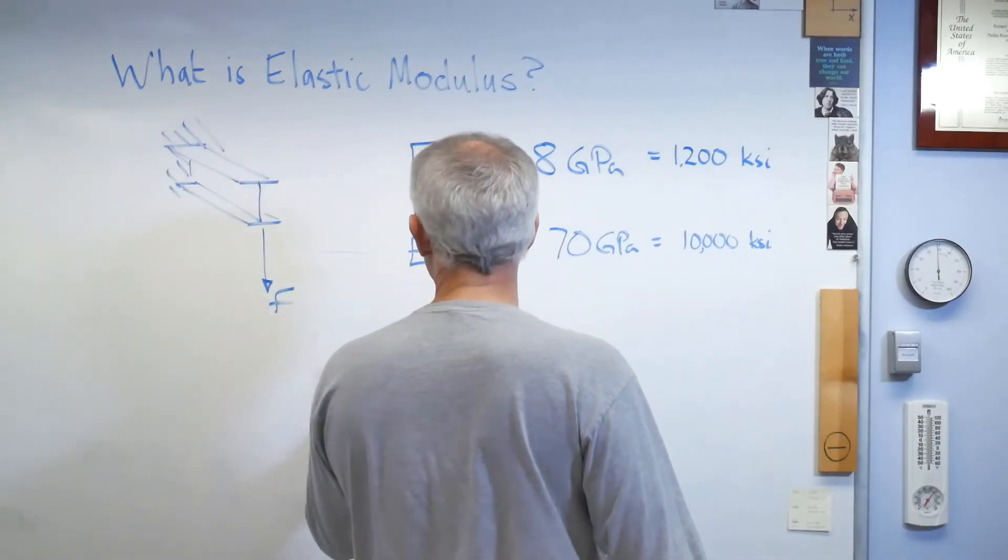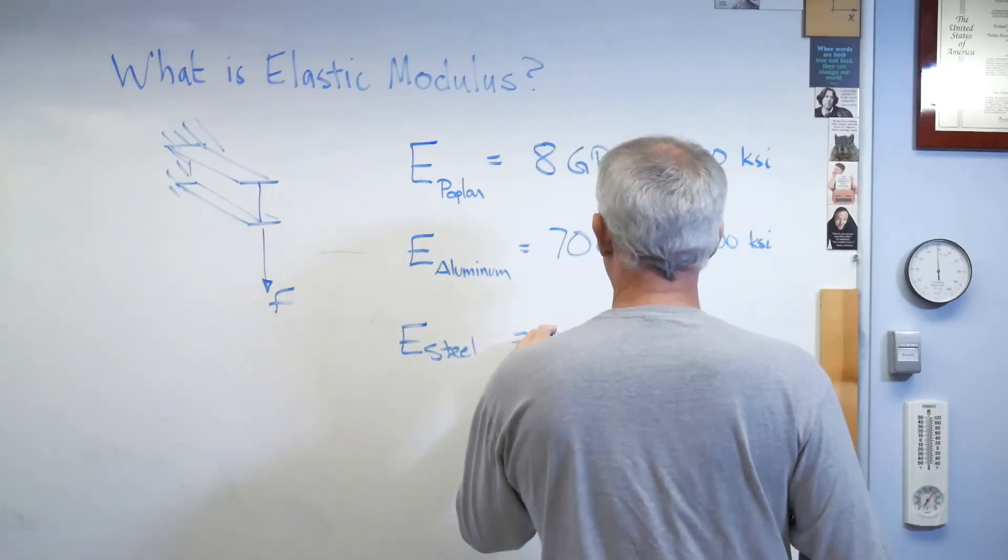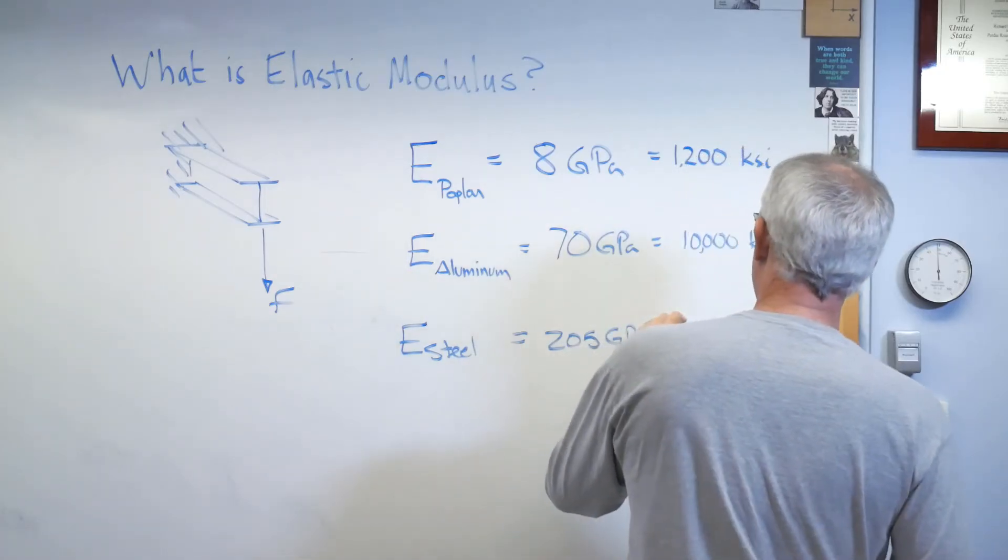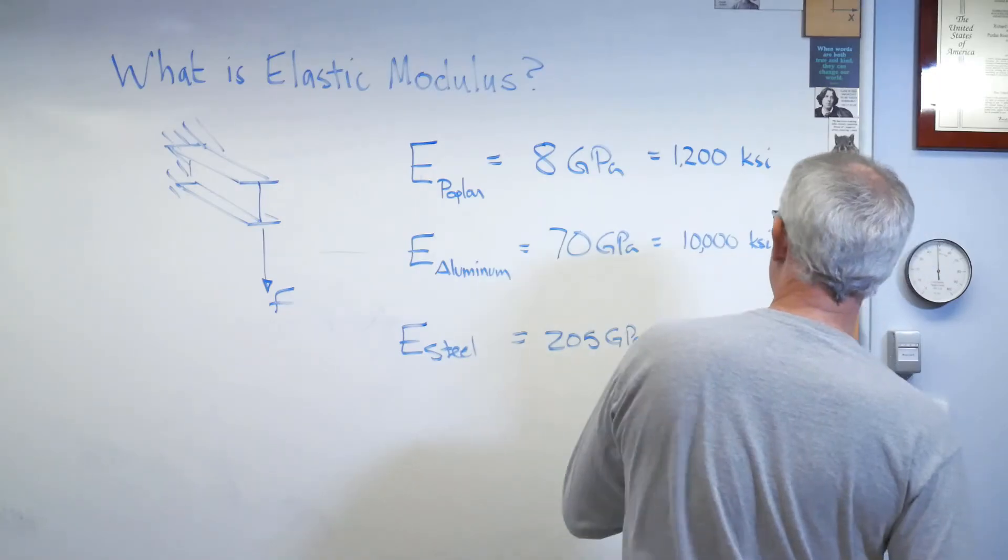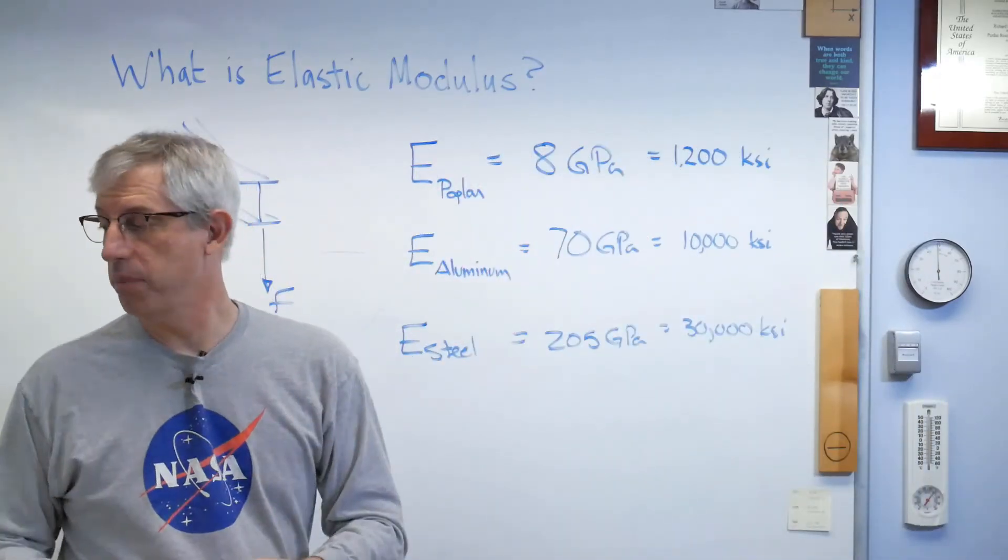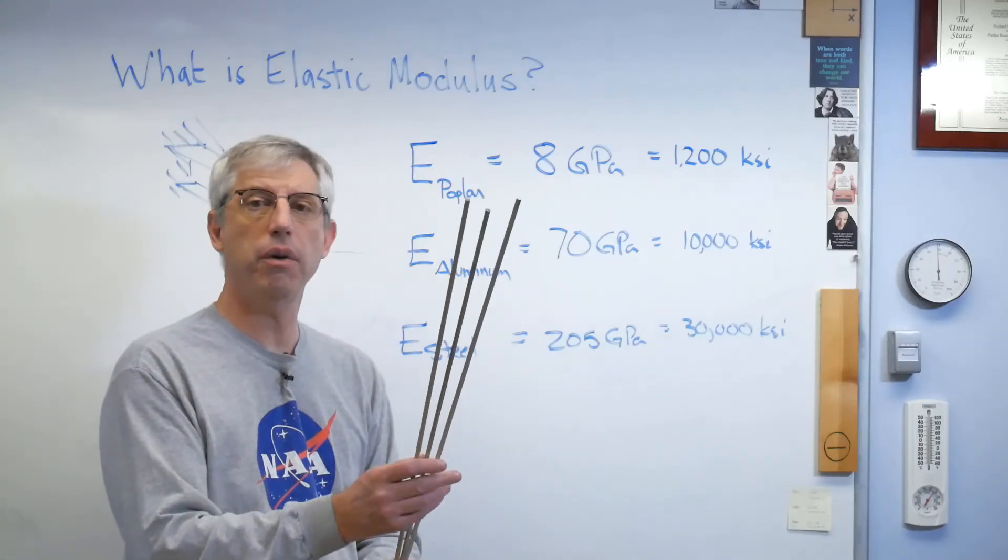And last one, let's go to steel. And that's 205 gigapascals. And that's about 30 million psi or 30,000 KSI. This explains it. This right here explains the difference in stiffness between these three rods.